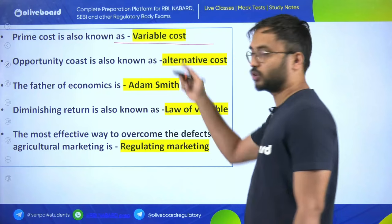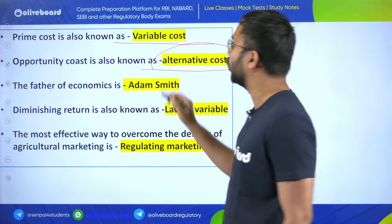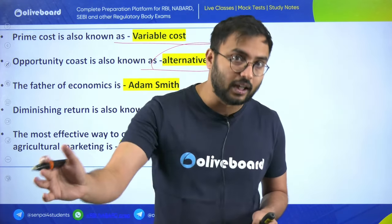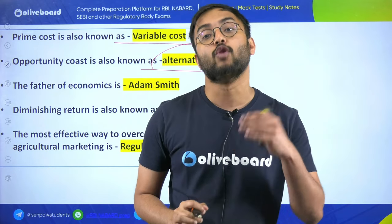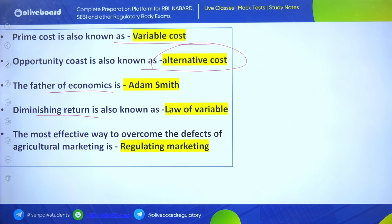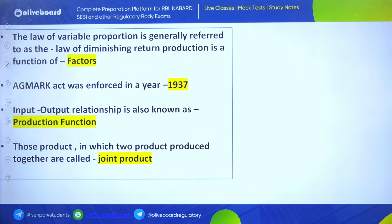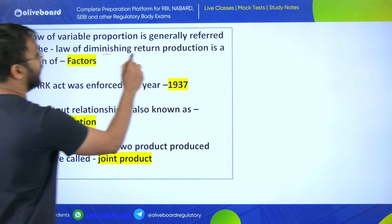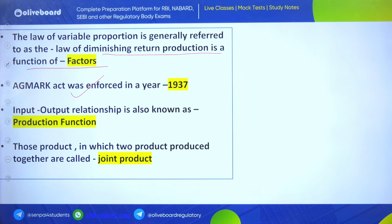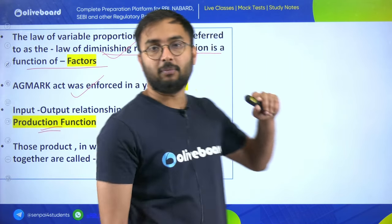The father of economics is Adam Smith. Diminishing return is also known as law of variable proportion. The most effective way to overcome defects of agriculture marketing is regulated marketing. Production is a function of factors. Agmark Act was imposed in 1937. Input-output relationship is also known as production function. Law of diminishing return - please read about it as it frequently appears in agriculture economics exams.